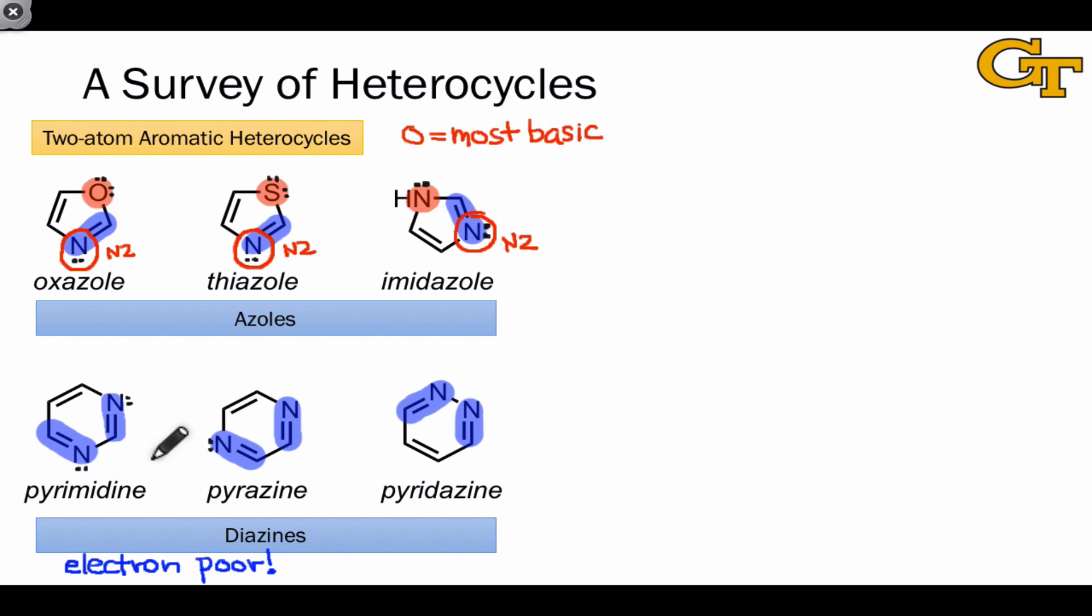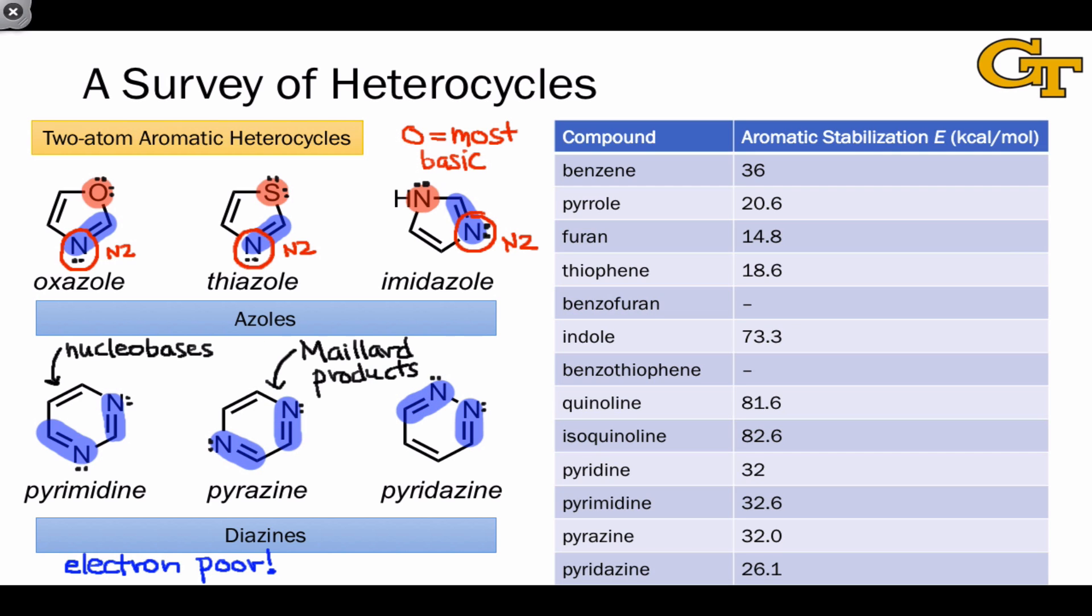For example, pyrimidines correspond to a class of nucleobases, or nitrogenous bases, in biochemistry. Pyrazines are byproducts of the Maillard reaction in cooking, so whenever you brown a piece of toast or cook something in the oven, pyrazines are generated, and they're a component of flavor of toasted or roasted things.